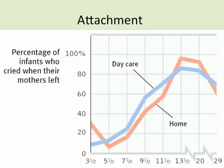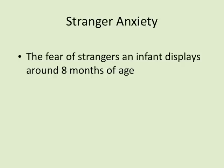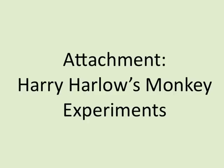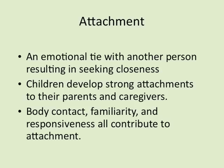Data on the percentage of infants who cry when their mothers leave shows that children at home cry significantly more than children in daycare. Children who go to daycare typically have parents who are at work, while kids at home have a parent who stays home full-time. Stranger anxiety — the fear of strangers that an infant displays — emerges around eight months of age, when they cannot be away from their primary attachment figure.